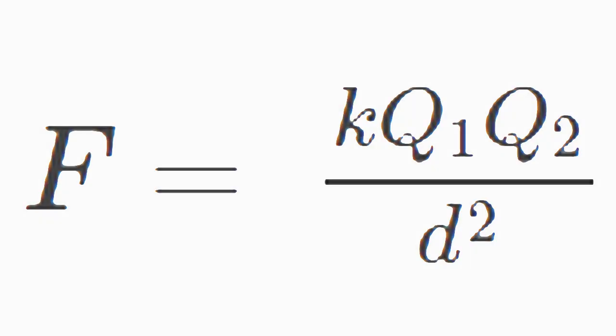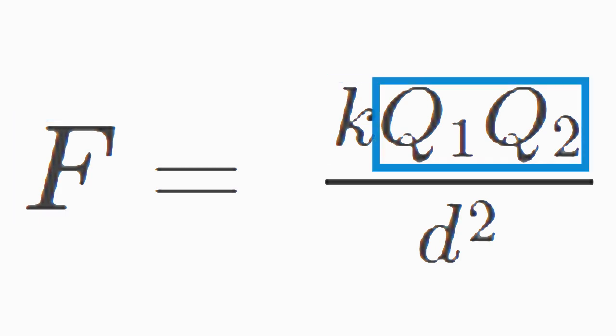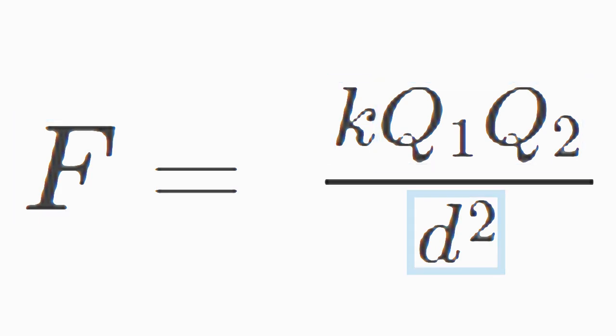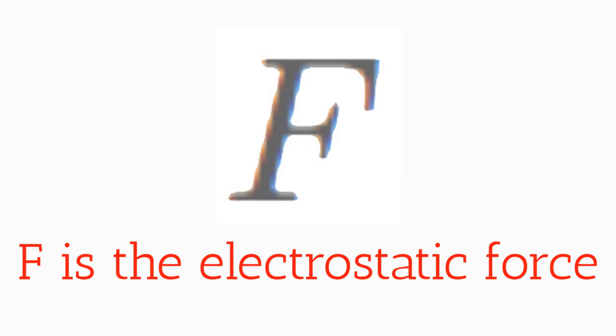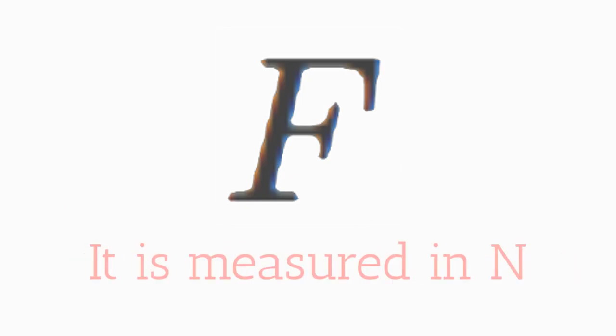Here's the formula, but let's break it down. F is equal to k times q1 times q2, all divided by d squared. F is just the electrostatic force, and it is measured in newtons.